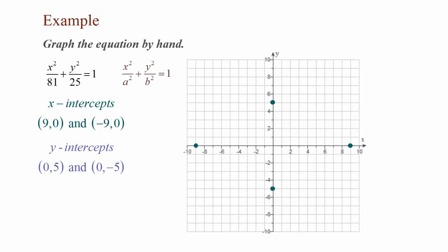Once I've plotted the four intercepts, I can draw the ellipse. Now I have the graph of the equation x² / 81 + y² / 25 = 1.